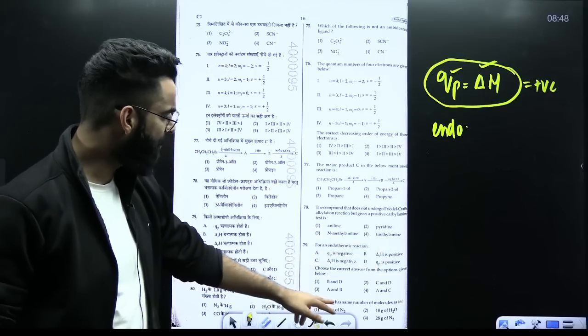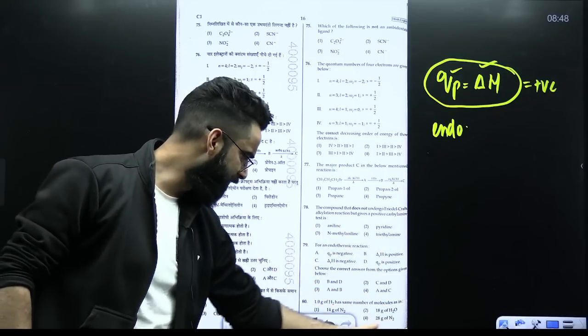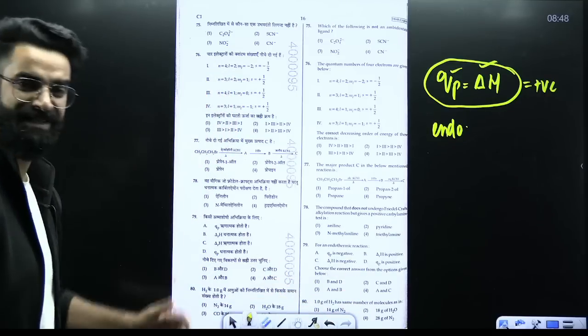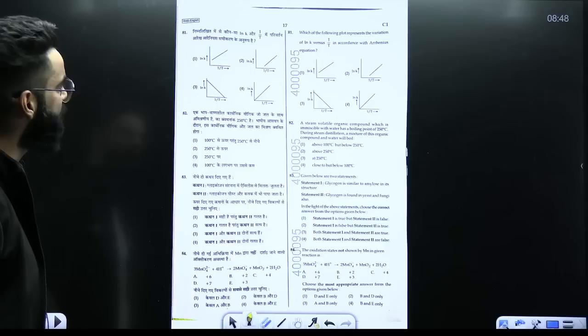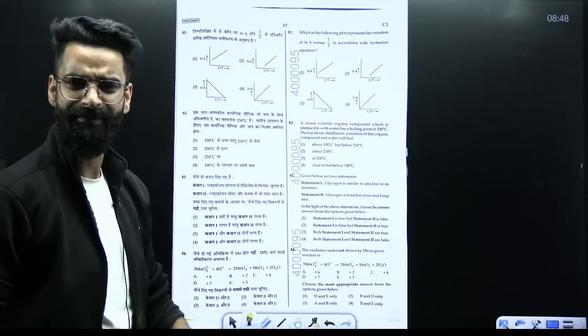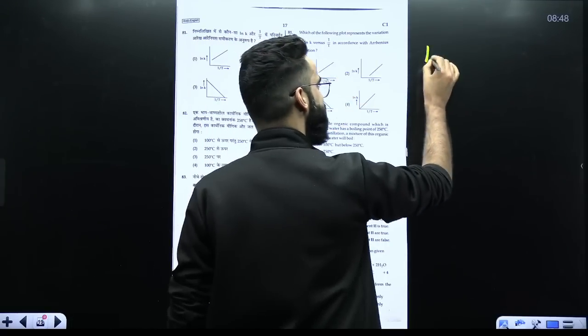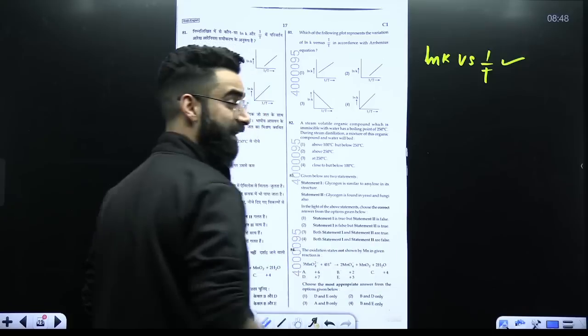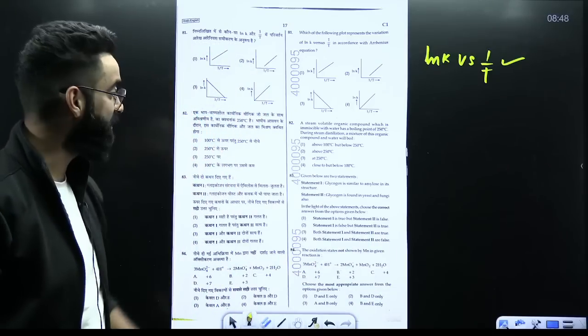Similarly, 1 gram of H2 has same number of molecules as that. These are few options which are given. You have to check 1 gram of H2 has same number of molecules as in what? So again, this was a basic question only. I think this was a repeated question, ln K versus 1 by T. ln K versus 1 by T graph. It was a repeated question and the same graph was asked in your 5th May examination as well.